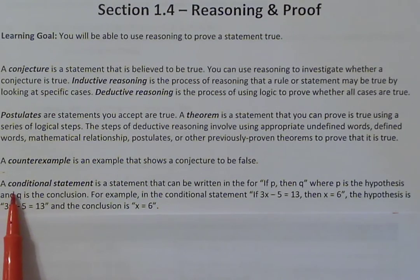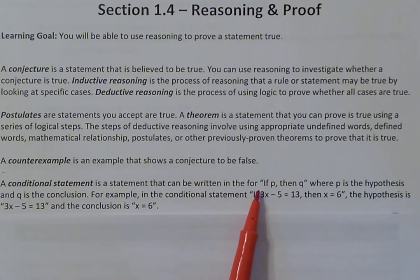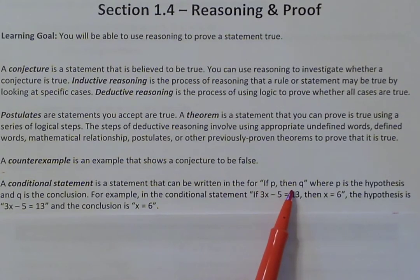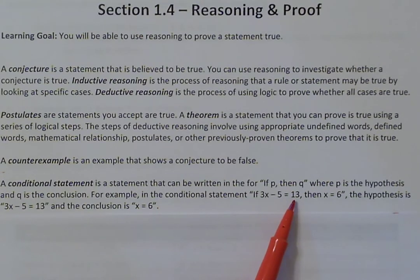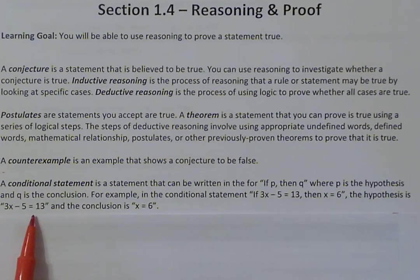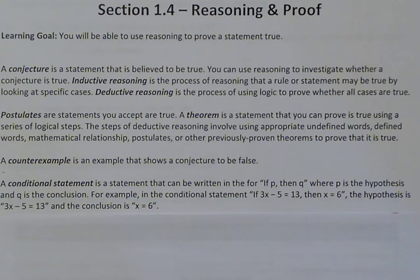A conditional statement is a statement written in the form of 'if P, then Q,' where P is the hypothesis and Q is the conclusion. For example, in the conditional statement 'if 3x minus 5 equals 13, then x equals 6,' the hypothesis is '3x minus 5 equals 13' and the conclusion is 'x equals 6.' The statement after 'if' is your hypothesis, and the statement after 'then' is your conclusion.